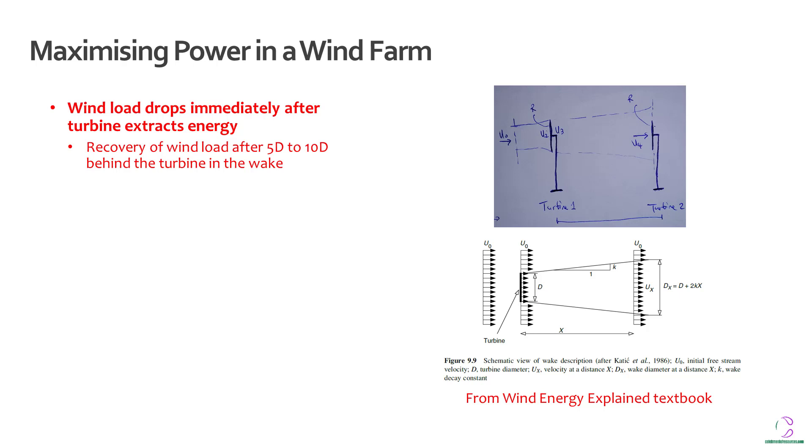Well basically, when two wind turbines are placed one in front of the other, as soon as the first wind turbine extracts energy from the wind, there is a reduction in velocity immediately after the wind turbine. It takes some distance for that wind to actually recover to the initial wind speed.